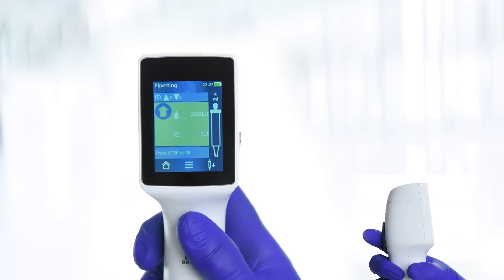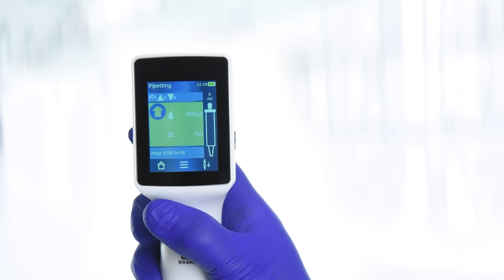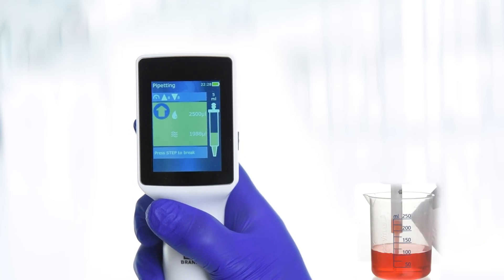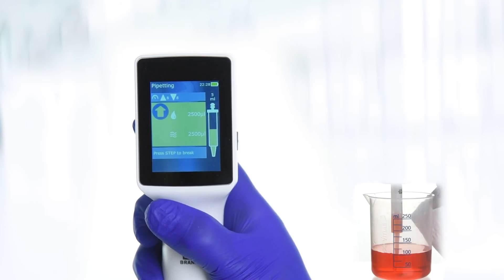Press the Step key to aspirate. The Pipet screen menu or the operating screen displays the dispensing volume and approximate volume in the PDTip. Press the Step key to dispense.